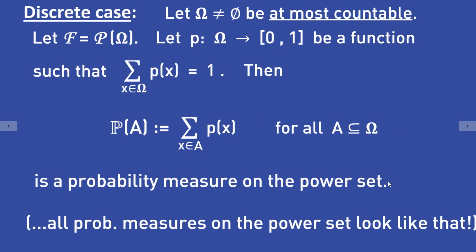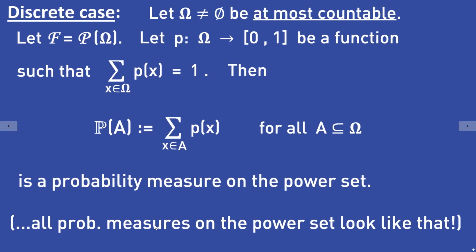Moreover, every other probability measure on the power set looks like that. That means if we consider an at most countable set omega together with the power set as the sigma algebra, we know exactly how the probability measures look — they all have this form.